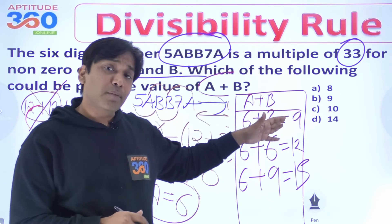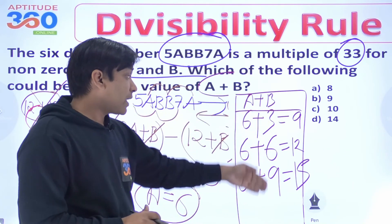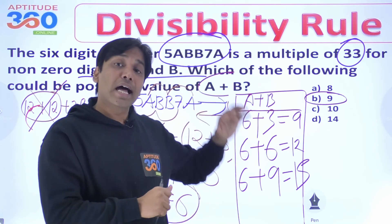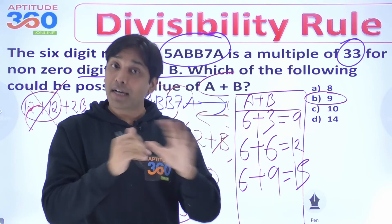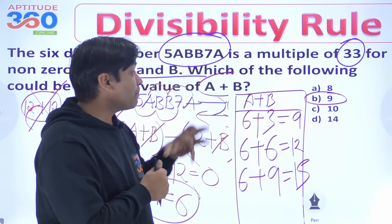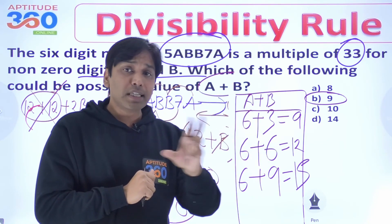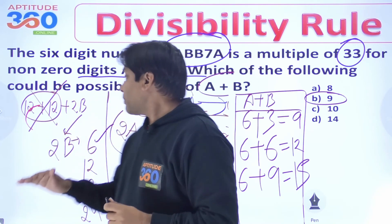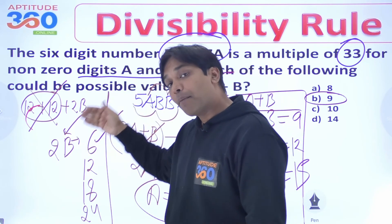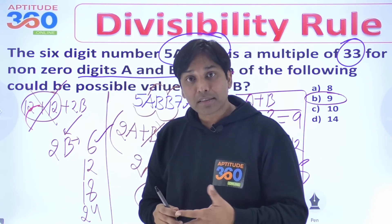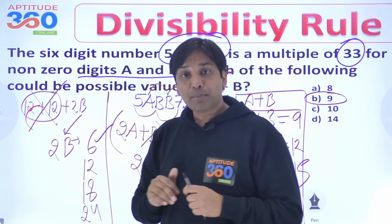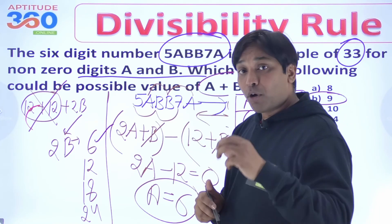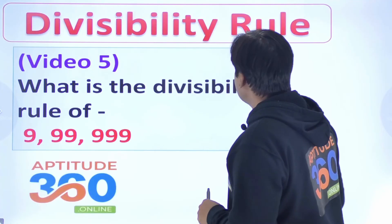Now look at the options: 9, 12, and 15 are all possible, but checking which option exists — 9 is the answer. So the answer is nothing but 9. This problem was quite simple: you found the divisibility rule of 33 as 3 and 11, applied both rules, got A = 6 from the rule of 11, then found the possibilities for B and plugged in to get A plus B. That's it.